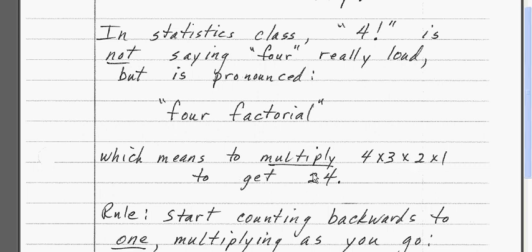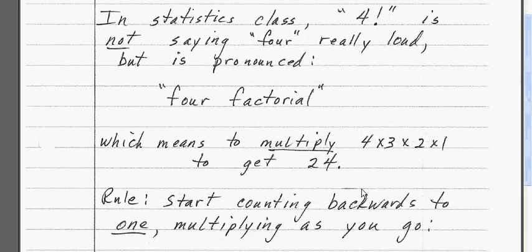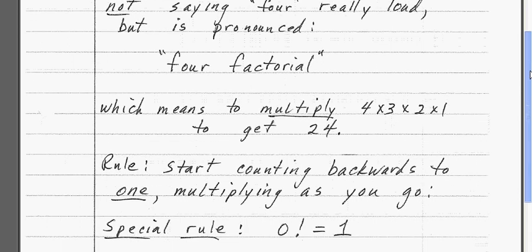So for a rule, simply start counting backwards to one, multiplying as you go. Now there is a special rule: what happens if you were to ever have the problem zero factorial? That would be perplexing because how are you going to count backwards to one when you're already starting with zero? Well, the answer that mathematicians have developed is to simply say that that expression is equal to one, no matter what.